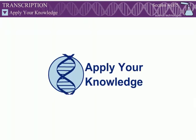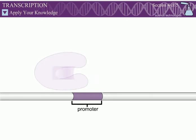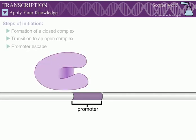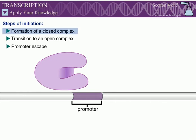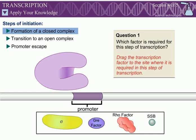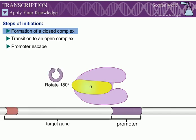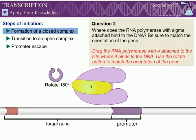How well do you understand transcription? In this section, you will find out. Initiation, Question 1: Help this bacterial RNA polymerase bind the DNA and begin transcription. Which factor is required for this step of transcription? Question 2: Where does the RNA polymerase with sigma attached bind to the DNA? Be sure to match the orientation of the gene.